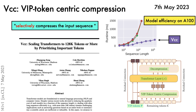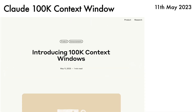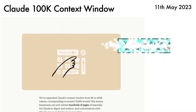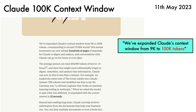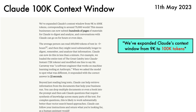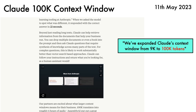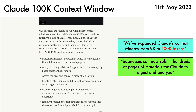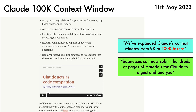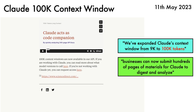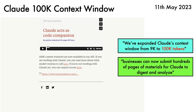These are then decompressed to the original sequence length. On a similar theme, an announcement from Anthropic says that they have expanded Claude's context window from 9k to 100k tokens. As a result, businesses can now submit hundreds of pages of materials for Claude to digest and analyse. I would do a demo, but alas, even after a month of waiting, I am still on the waitlist.